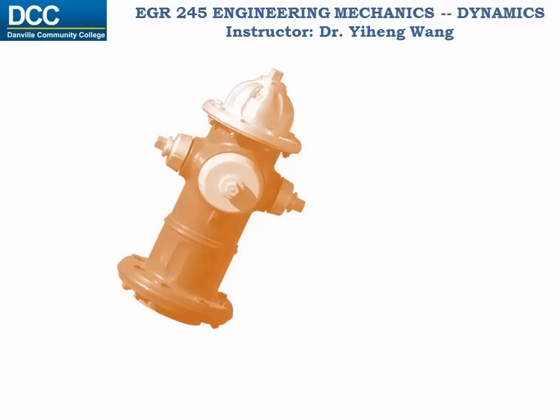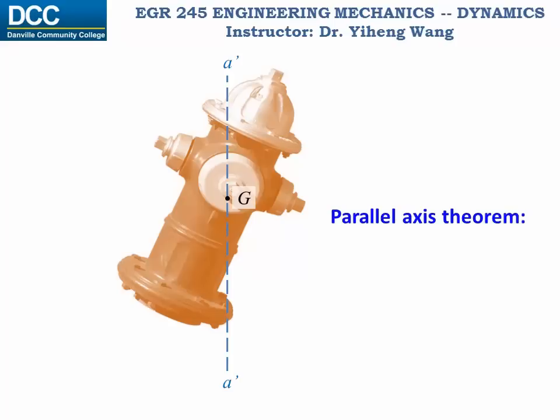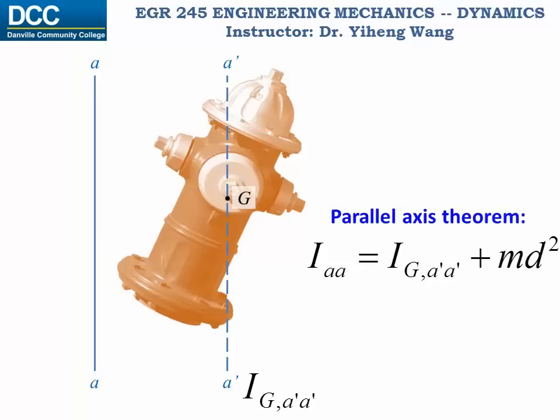Similar to area moment of inertia, the parallel axis theorem also applies to mass moment of inertia. If there is an axis passing through the mass center G of the rigid body, and we know the mass moment of inertia about that axis is I_G (a-prime a-prime), then to calculate the mass moment of inertia about another axis aa parallel to a-prime a-prime, we use: I_aa = I_G + m·d², where d is the perpendicular distance between the two parallel axes.